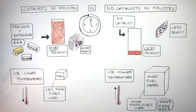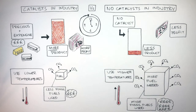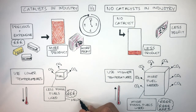Using less fossil fuels due to using a catalyst saves the company money. Not only this but it also helps the environment, as using less fossil fuels means less combustion so there are going to be less carbon dioxide emissions. Whereas using no catalyst results in there being more fossil fuels used, so there's going to be more combustion and more carbon dioxide emissions. So using a catalyst is really good for the environment as less fossil fuels means less combustion, so less carbon dioxide emissions, and this helps stop climate change.